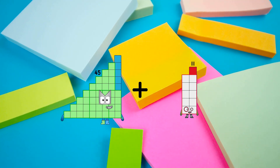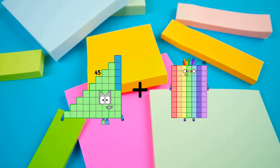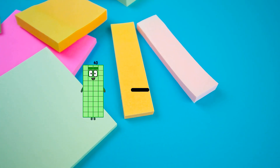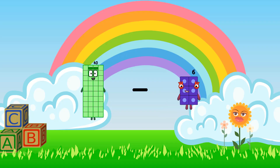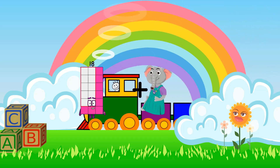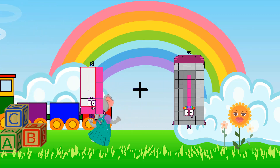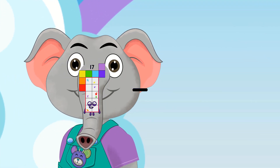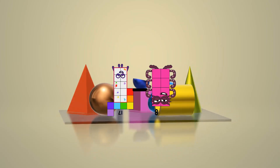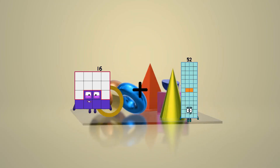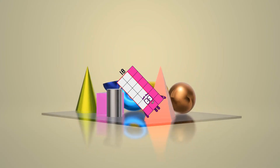45 plus 40 equals 85. 40 minus 33 equals 7. 18 plus 81 equals 99. 80 plus 89 equals 89. 90 plus 88 equals 80.